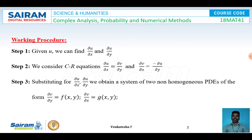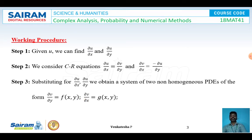Step two: we use the Cauchy-Riemann equations ∂u/∂x = ∂v/∂y and ∂v/∂x = −∂u/∂y. If u is given, we convert all equations in terms of v using CR equations. Step three: substituting ∂u/∂x and ∂u/∂y, we obtain a system of two non-homogeneous PDEs: ∂v/∂y = f(x,y) and ∂v/∂x = g(x,y). When v is given, we similarly get two PDEs for u.